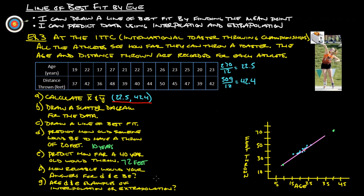How reliable would your answers for D and E be? Would a 10-year-old be able to throw 20 feet? Possibly. Would someone who's 40 be able to throw it that much farther than all these people? Probably not. The extrapolated answers sometimes would be reliable, sometimes they wouldn't. In this case, that probably would be pretty close. This one probably would not be very close.